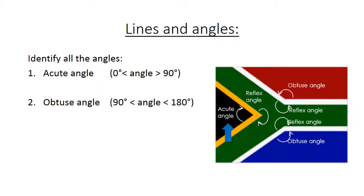Obtuse angle is an angle greater than 90 degrees but less than 180 degrees. And there we have an obtuse angle.